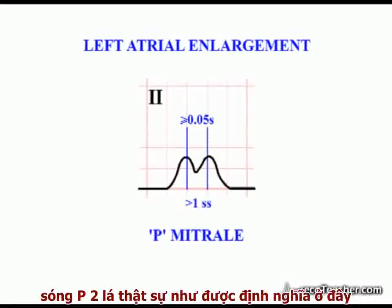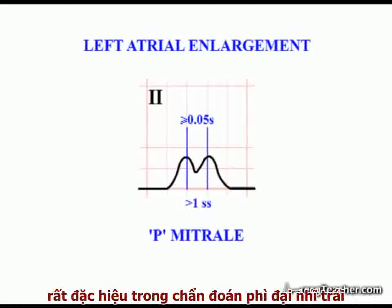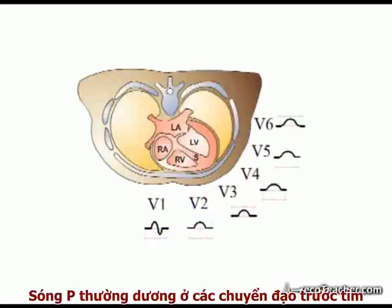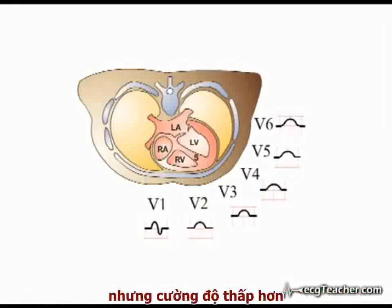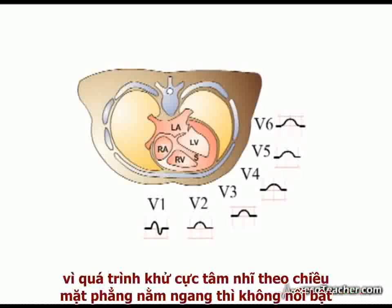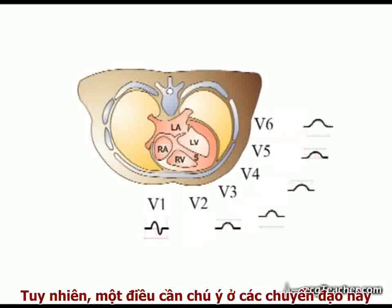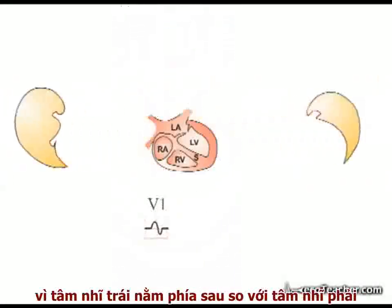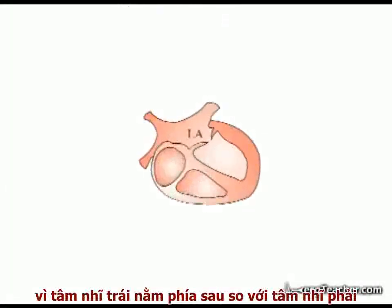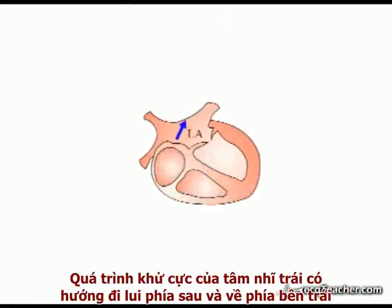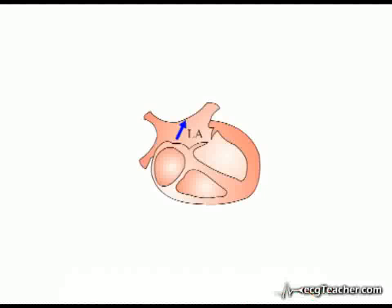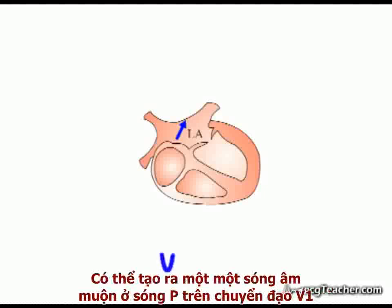True P-mitrale, as defined here, is very specific for left atrial enlargement. P-waves are generally positive in the chest leads, but tend to be of low amplitude, as the spread of atrial depolarization is less prominent in the horizontal plane compared to that in the frontal plane. However, one point of note in these leads: as the left atrium lies somewhat posterior to the right chamber, left atrial depolarization moving posteriorly and to the left may produce a small negative terminal deflection in the P-wave recorded in Lead V1.